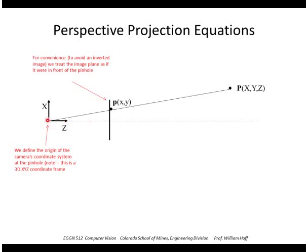So this is going to be our pinhole, and we're going to define that to be the origin of the camera's coordinate system. So this is actually a 3D coordinate system. We're going to take X with a Z pointing outward. The distance from the pinhole to the image plane is our focal length, called F. The position of the 3D scene point is XYZ, and that's expressed with respect to the coordinate system of the camera.